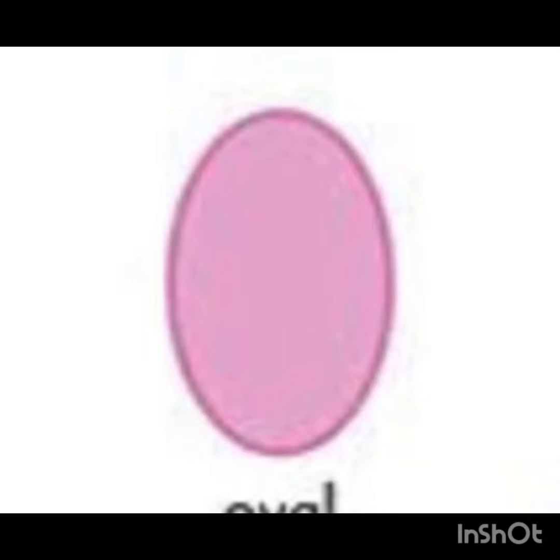Okay children, the fifth shape is oval. Its spelling is O-V-A-L, oval. An example of oval is an egg. The egg is oval shaped.